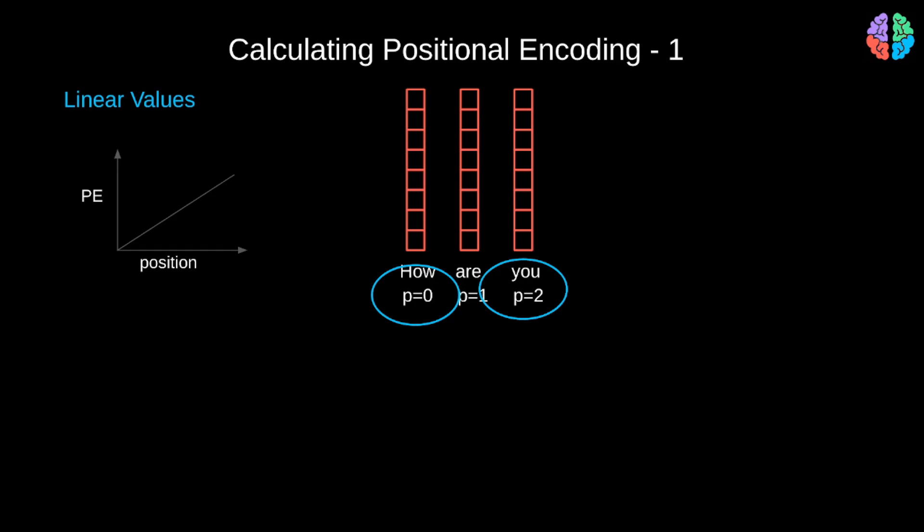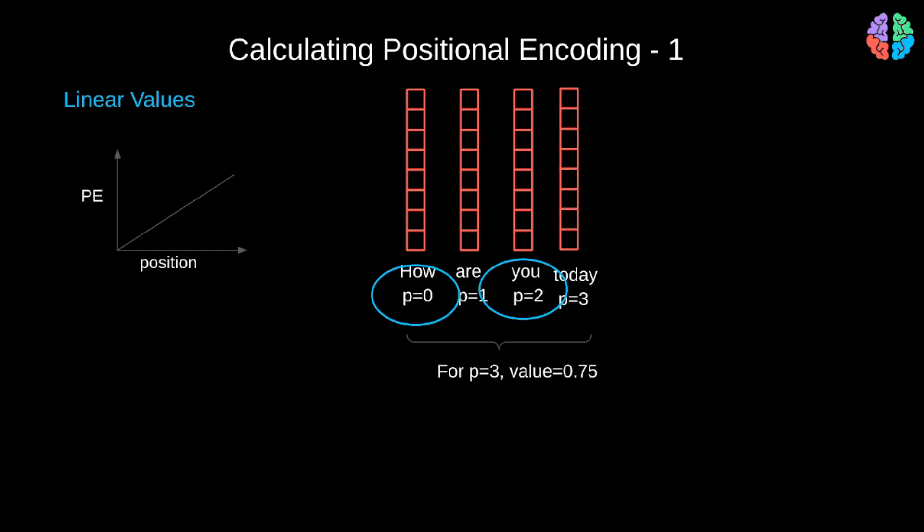Additionally, if the input has two sentences, giving continuous numbers like this will make the model think that the two sentences always occur together at all times. You may argue that we could normalize these positions to get a value between 0 and 1. However, if the length of the sentence is different, we will end up getting different values for the same position. For example, if the sentence is 'how are you today' instead of 'how are you,' then for position 3 the value is 0.75 instead of 1. So we don't want any dependency on the length of the sentence either.